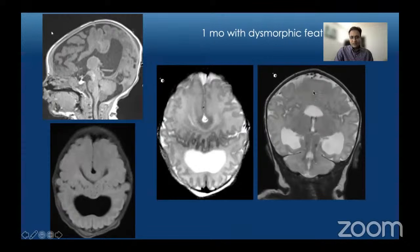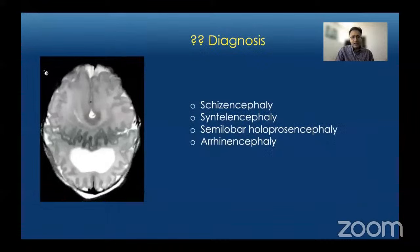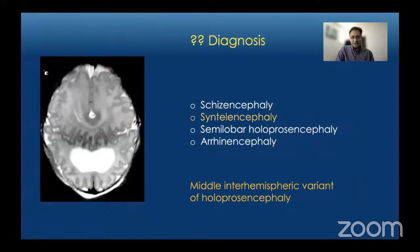On coronal images there is fusion of the cerebral hemispheres in the midline, fusion of the ventricles with absent interventricular septum. On sagittal T1-weighted images we see absence of the corpus callosum for the most part. The diagnosis here is syntelencephaly, also known as the middle inter-hemispheric variant of holoprosencephaly.